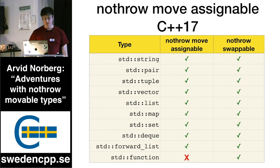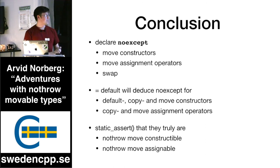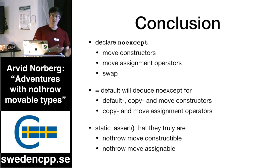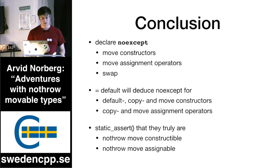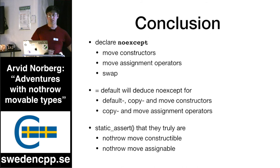My conclusion: always try to make your move constructors, move assignment operators, and swap `noexcept`. Using `= default` is a really convenient way — if you're portable and want to build against standard libraries where some of these aren't `noexcept` and sometimes they are, you can use `= default` to just do the best you can based on what the underlying types do. Another technique I use is to put a few `static_assert`s after every class I care about to make sure they are nothrow move assignable, nothrow move constructible, and perhaps nothrow default constructible.